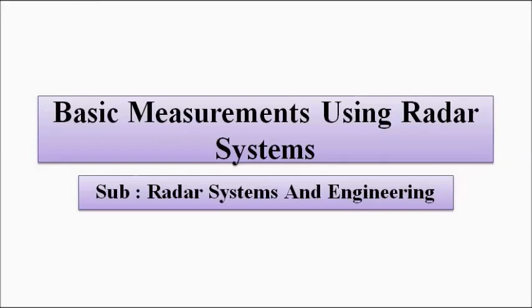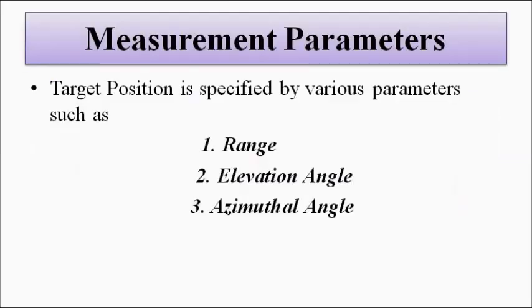We will look at what parameters are required to measure about a target to get all the necessary information about its exact location in space — how to do it and what parameters are required. Mainly, in order to get substantial information about the exact location of a target in space, three main parameters are required.